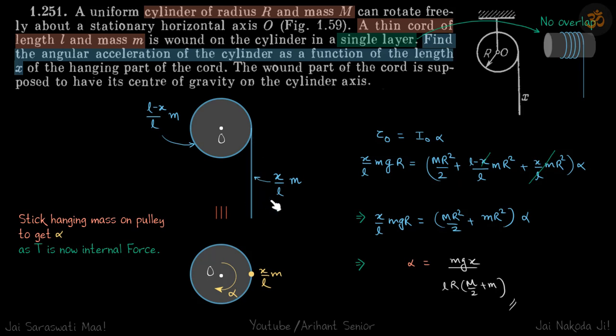As we have done in previous problems, we are going to take this whole mass and stick it here, so we get rid of the tension, which is an internal force. We stick hanging mass on pulley to get α, as T is now internal force. Now we need to find α, so let's calculate torque.